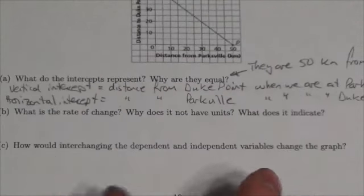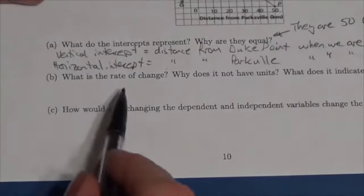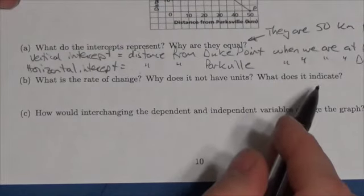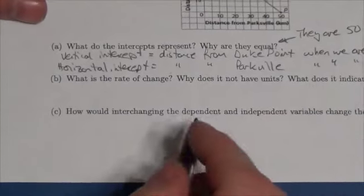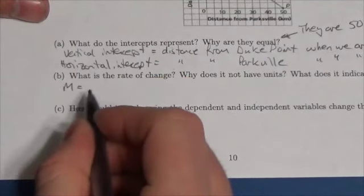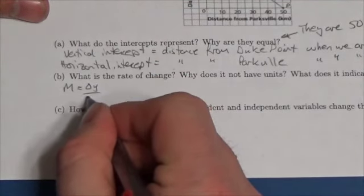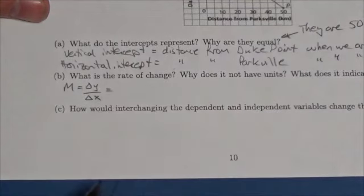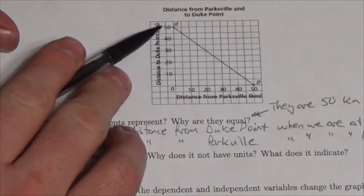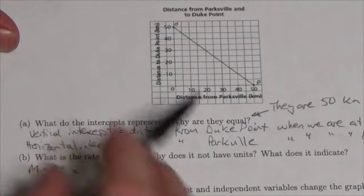Now let's take a look at the next question. It says: what is the rate of change, why does it not have any units, and what does it indicate? Well, the rate of change, remember, is represented with M, and this is the change in the Y coordinate over the change in the X coordinate. In this case, when you look at the graph, you'll notice that we start off at 50 and it's a vertical drop of 50.